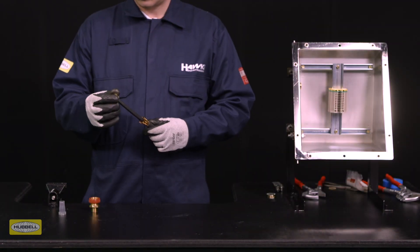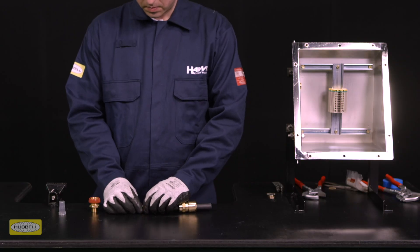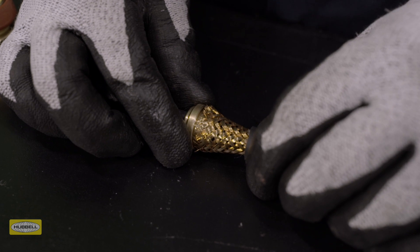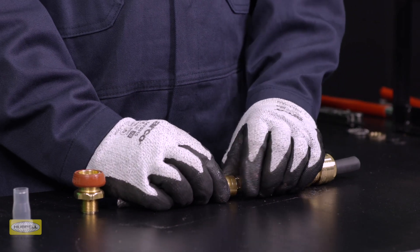Slide the spigot over the cable, taking care not to damage the rubber resin dam. Push the armor or braid up to the spigot shoulder. Slide the clamping ring up to the armor or braid by hand.